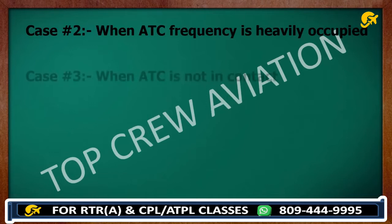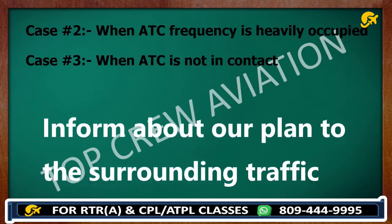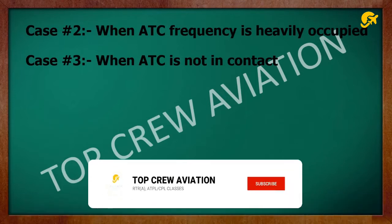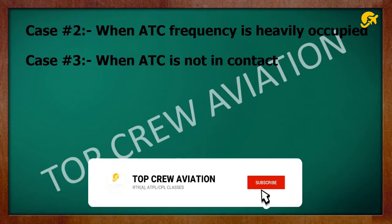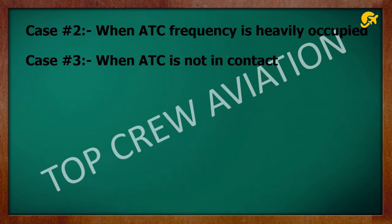Let's discuss situation number three: when ATC is not in contact. In this case, we have to inform surrounding traffic about our plan, because we are not in contact with ATC and they are not aware of what we are going to do.